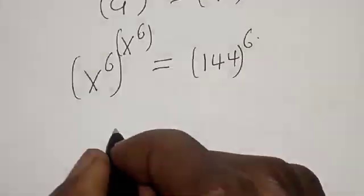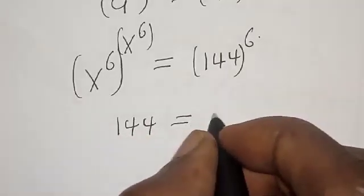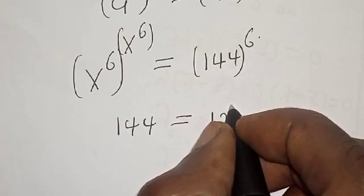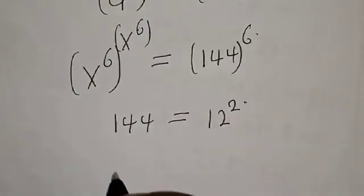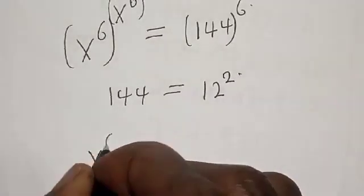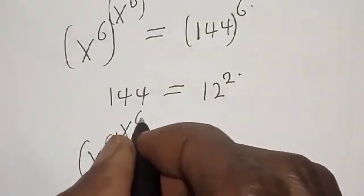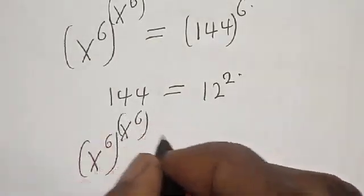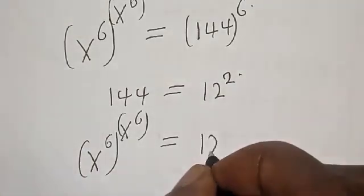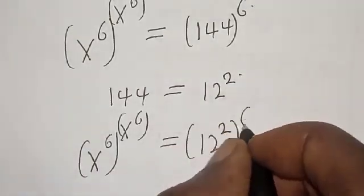Now remember that 144 is equal to 12 squared. So s raised to the power of s raised to the power of s raised to the power of 6 is equal to 12 squared, raised to the power of 6.